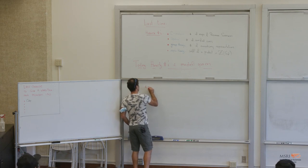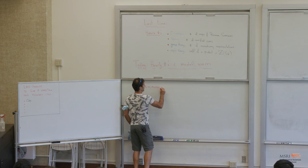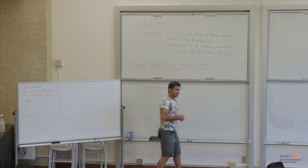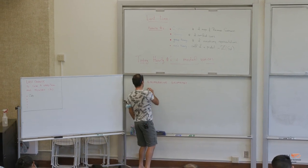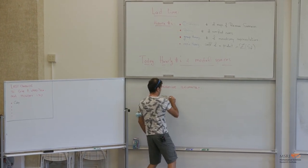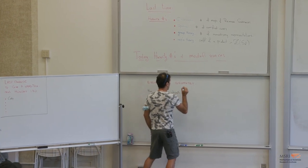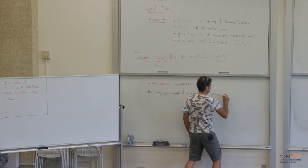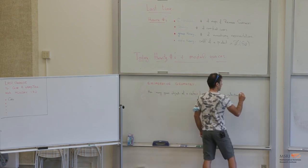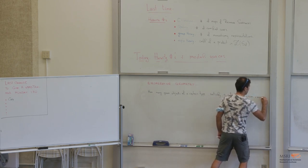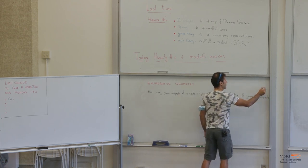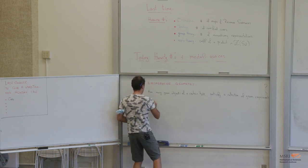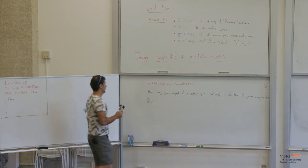I want to do a quick discussion of enumerative geometry. As Hannah said yesterday, enumerative geometry studies questions of the form: how many geometric objects of a certain type satisfy a collection of geometric requirements? As an example, question number two: how many conics in P² satisfy the condition of passing through five points in P²?